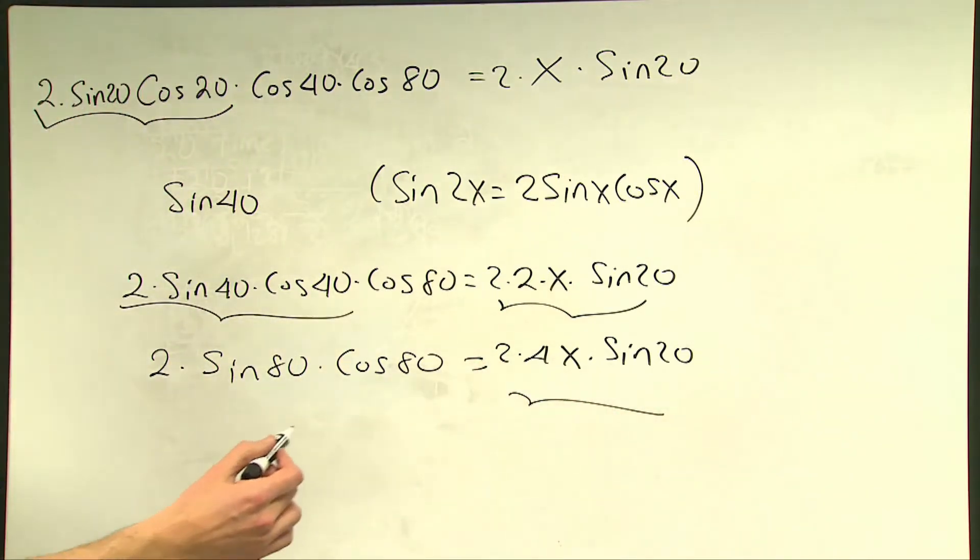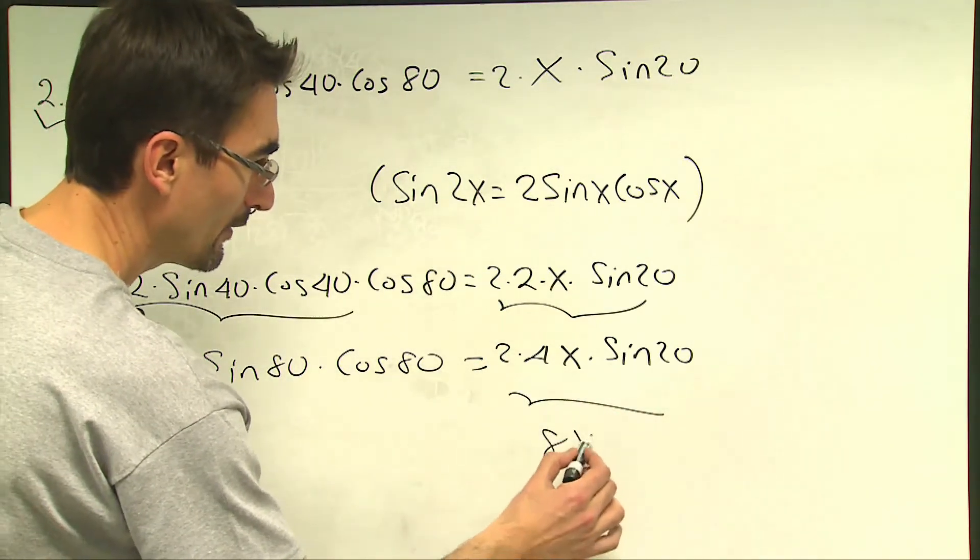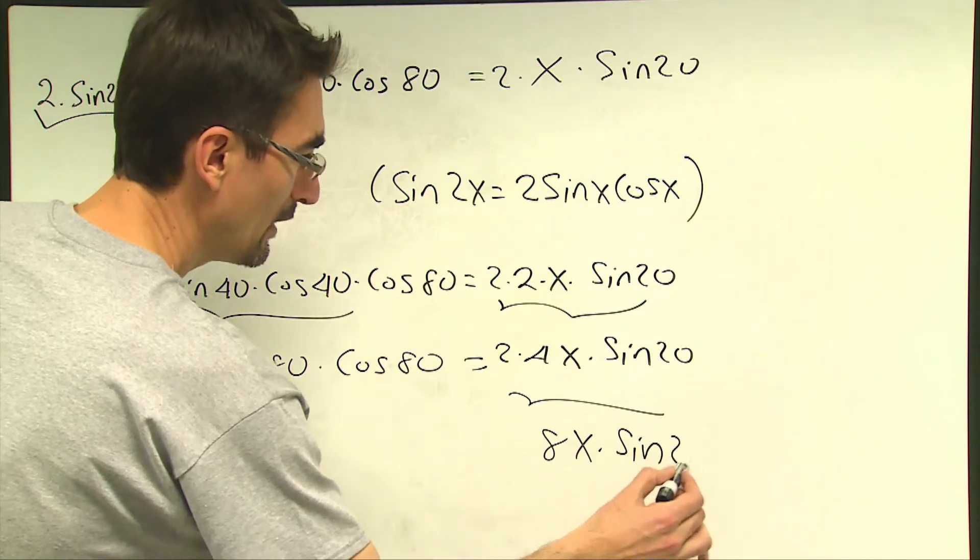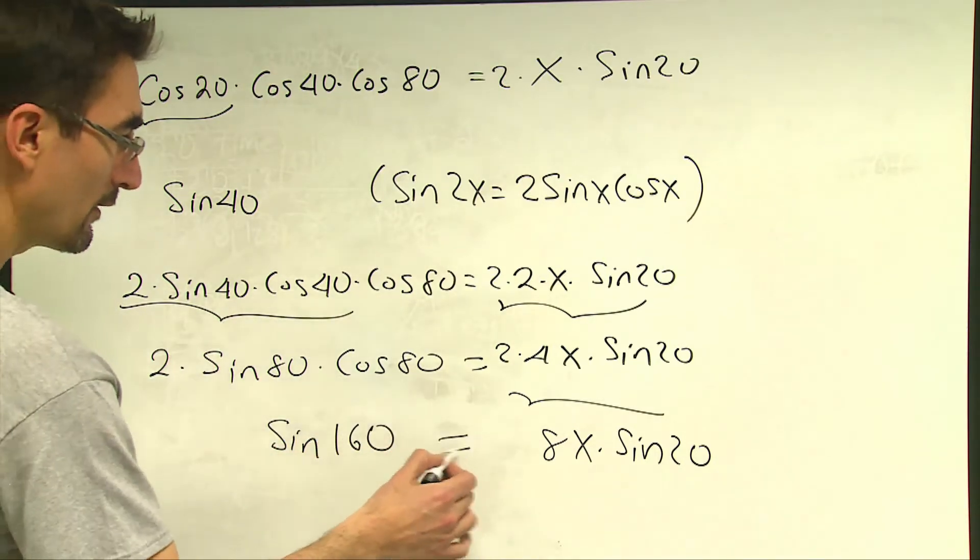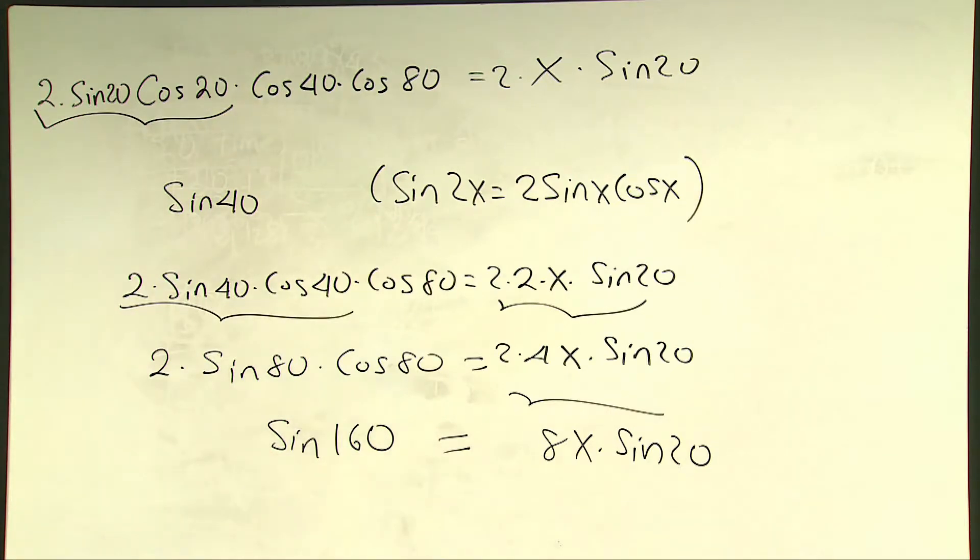On the right hand side, I'm going to have 2 times 4x which is 8x times sine 20. And on the left hand side, I have 2 times sine 80 times cosine 80. Another great application of half angle formula which will give me sine 160 equals 8x times sine 20.